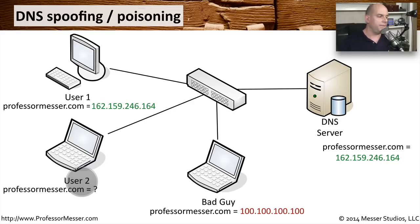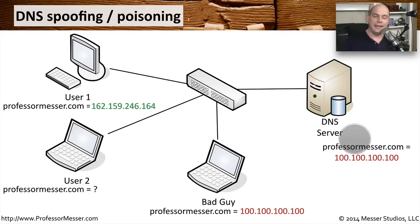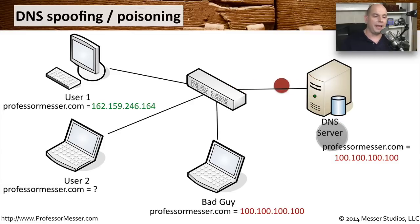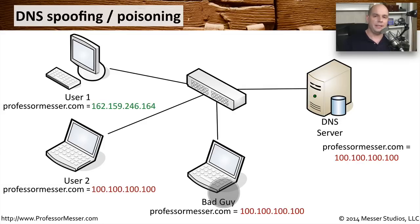The second user performs the same function and sends a request out to the DNS server. But before he can, the bad guy sends an update message to the DNS server, and the DNS server does nothing to validate that. This means the software in the DNS server is faulty. Once it receives that bad, poisoned information from the bad guy, it changes the IP address for that particular website. Now the second user sends the same request for the same domain name, but the response that goes back is the poisoned information — 100.100.100.100. User 2 has received an incorrect IP address for the ProfessorMesser.com website, and now all the bad guy has to do is wait for that user to visit his malicious site.